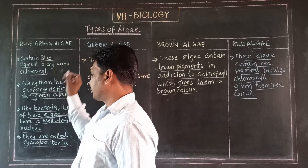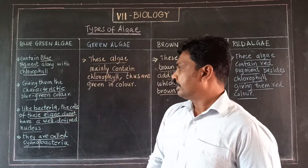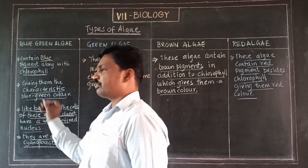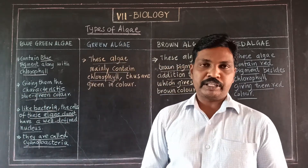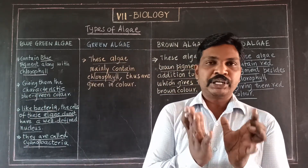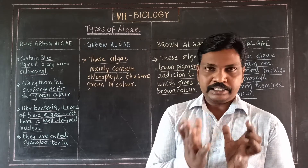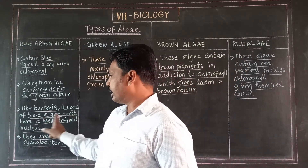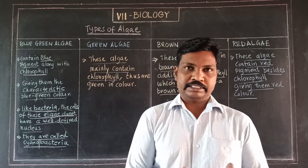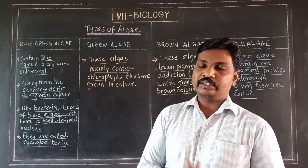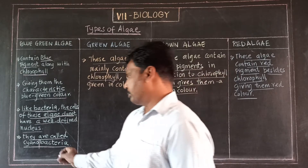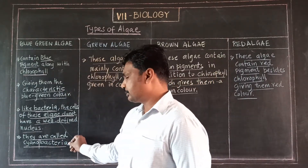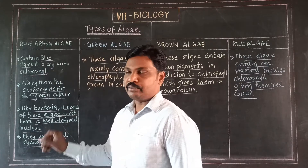Blue-green algae are like bacteria — the algae do not have a definite nucleus. Because of this similarity with bacteria, they are called cyanobacteria.